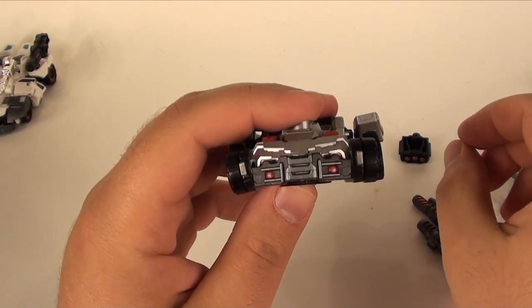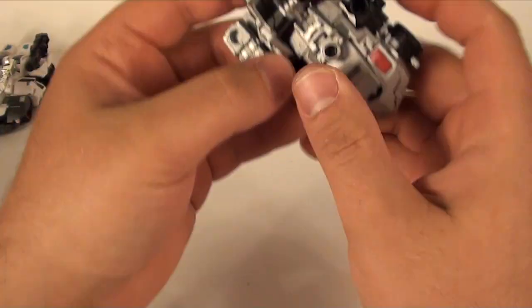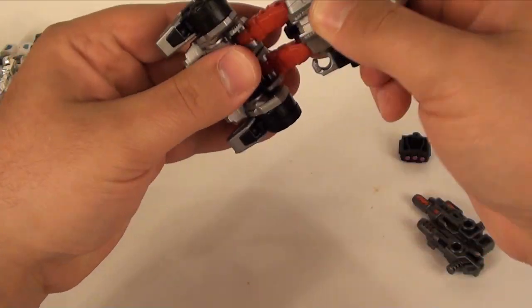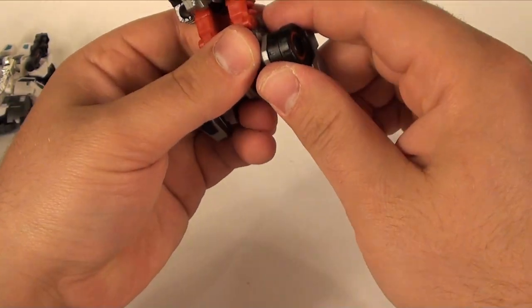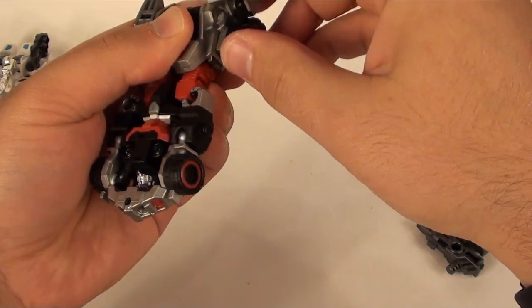Let's look at just the base form. To transform it, we rotate the legs out, we take the foot here and swivel it around.